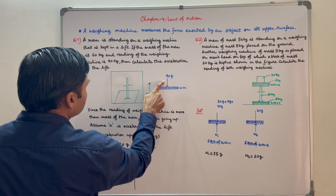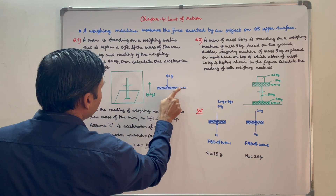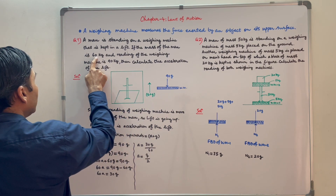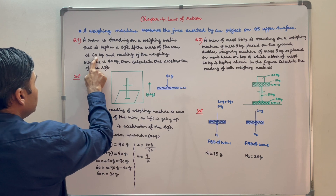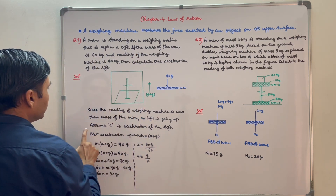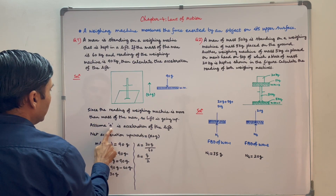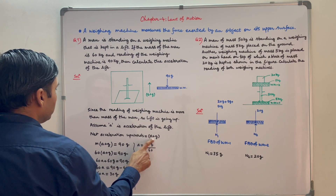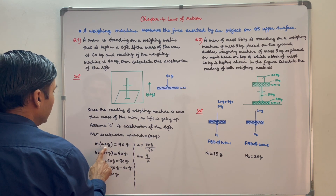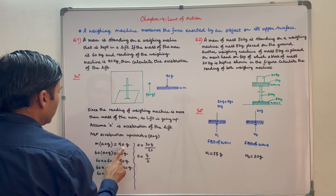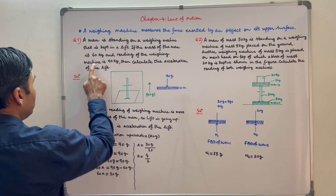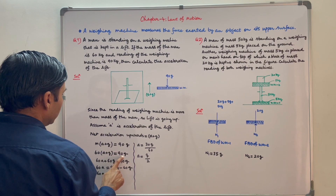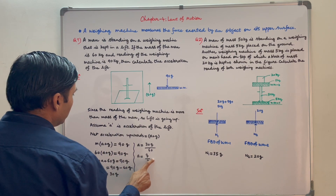90g force is exerted on the upper surface of the weighing machine. It is given that the reading of the weighing machine is more than the mass of the man, which means the lift is going upwards. Let the acceleration of the lift be A. Then the net acceleration upwards will be A plus g. We can form the equation as M into (A plus g) equals 90g. M is given as 60 kg, so 60 into (A plus g) equals 90g. So A comes out to be equal to g by 2.